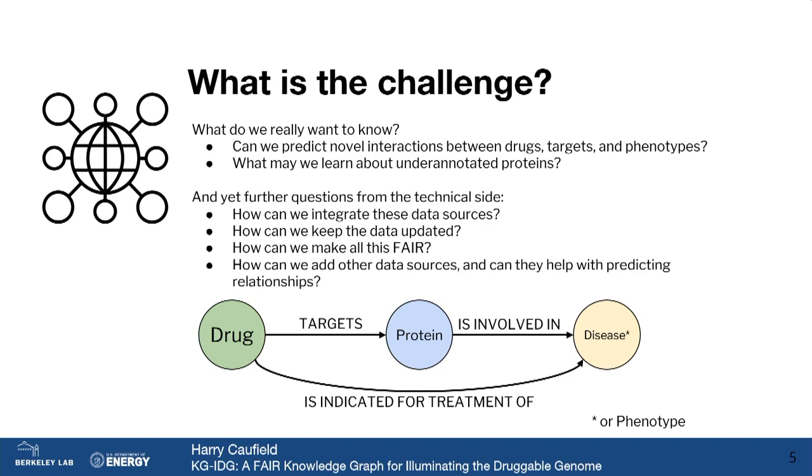At the same time, this is a FAIR session, and we know there's a lot of data in a graph like this that we want to make more FAIR and continue having it be FAIR. So how do we integrate these individual data sources in ways that they probably aren't already integratable? How do we keep it all updated as each of those resources change? And how do we make it all FAIR in other ways besides interoperability, and can additional data sources help with that goal of predicting relationships between drugs and their targets?